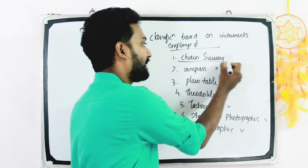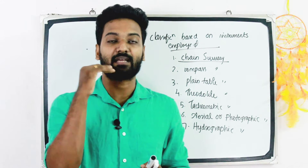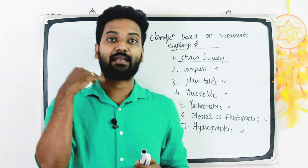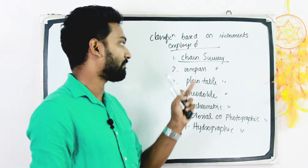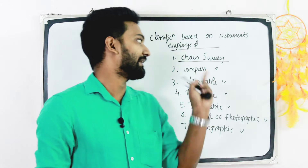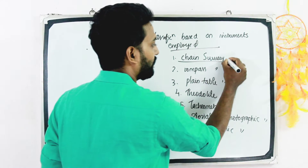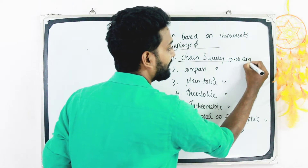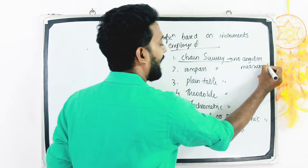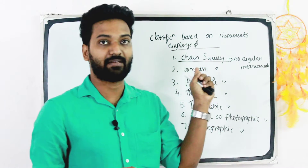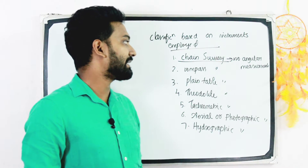We will discuss the first — chain survey. Chain survey means the system of surveying in which the sides of various triangles, or lines connecting stations, are measured directly in the field. In this method, no angular measurements are taken.